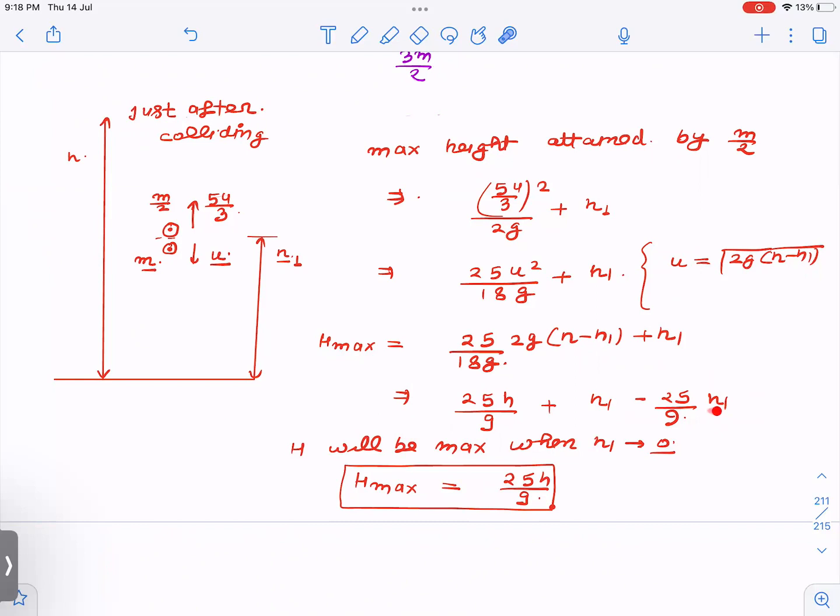If h₁ takes any other value which is more than 0, then height will be less than 25h/9. So that is why we are taking h₁=0 to maximize this. So that means if you want to get the maximum height, then collision should happen just at the ground level. Then you get max height.